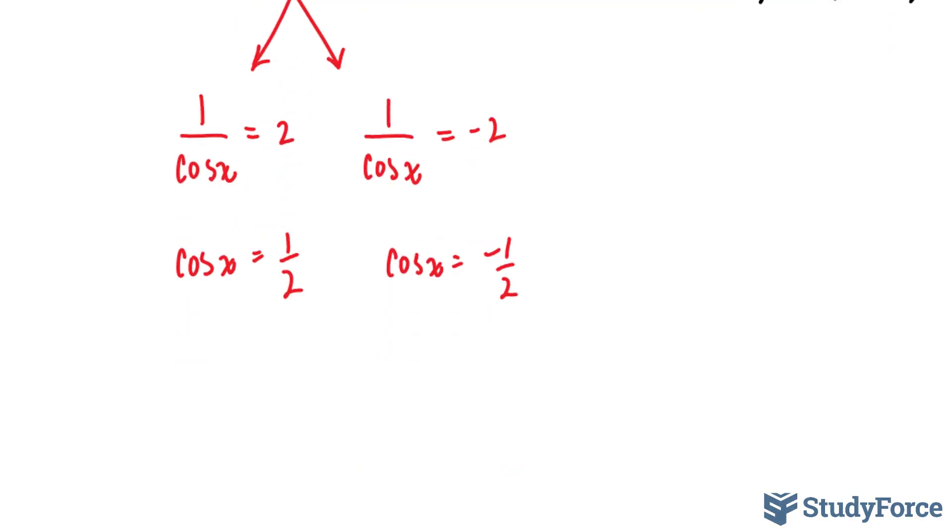Starting with this one, I know that cosine is positive here and here. The first and fourth quadrant. And it's negative here and here. So the angles that will represent half for this situation will be this one and this one. And the opposite is true for this part.